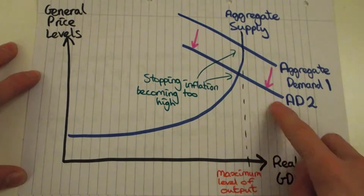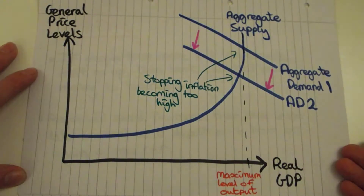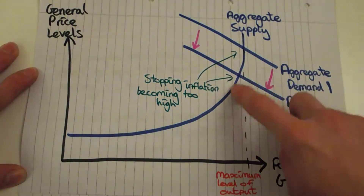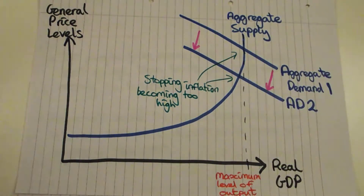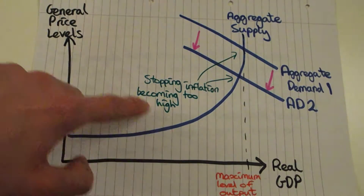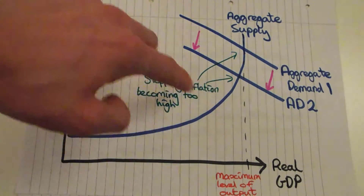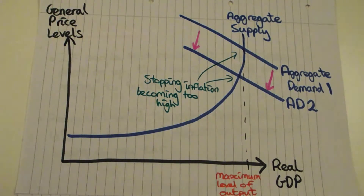Raising interest rates should shift aggregate demand downwards — people are willing to pay less for goods and services. So although our real GDP hasn't changed much, we get a significant dip in price levels, preventing that hyperinflation. On the other hand, if aggregate demand is low, lowering the interest rate shifts demand up to a point where there's not much change in price levels — not much inflation — but we're really helping expand the economy. This happens in cycles as aggregate supply and demand fluctuate.